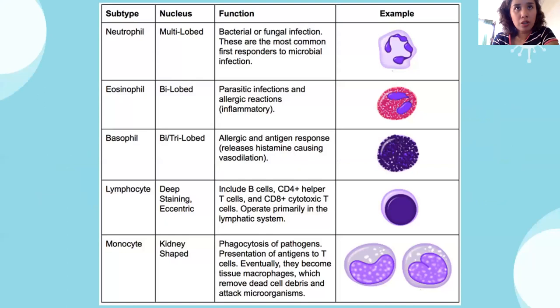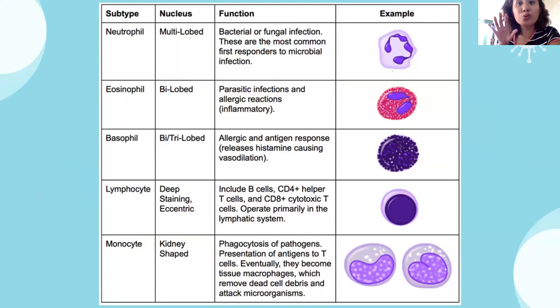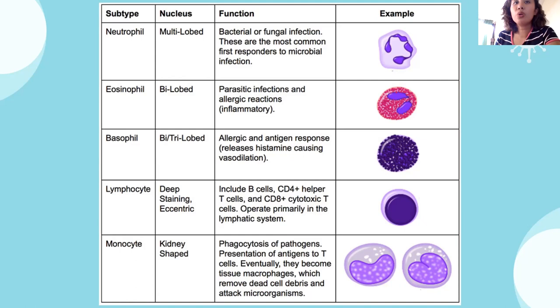A mnemonic: Never Let Monkeys Eat Bananas — neutrophil, lymphocyte, monocyte, eosinophil, basophil. Your neutrophil is mostly for bacterial and fungal infections — they are the first responders to the site of inflammation, infection, or injury. Eosinophils respond to parasitic infections and also have some role in allergic reactions.